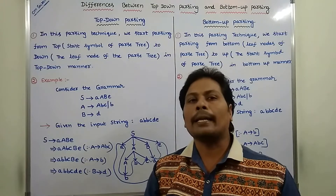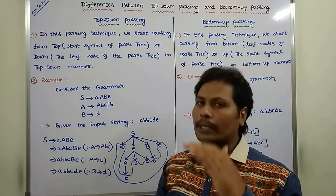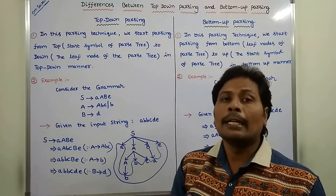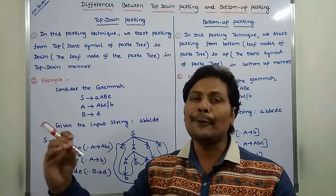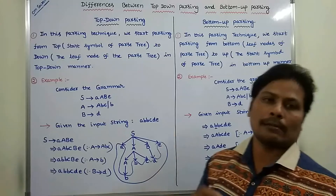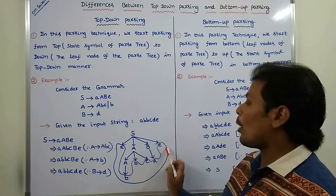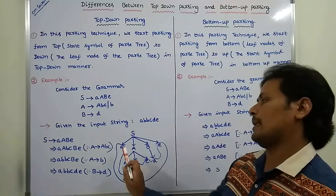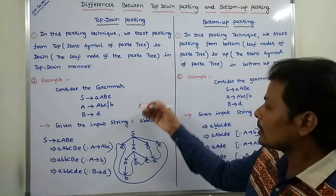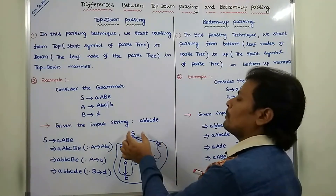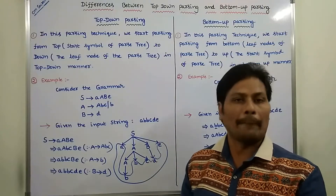First point: in top-down parsing, we start parsing from top to down in a top-down manner. Here, top is nothing but the start symbol of the parse tree, and down is nothing but the leaf nodes of the parse tree. These are the leaf nodes: a, b, b, c, d, e. We start from the start symbol of the parse tree and go down to the leaf nodes in a top-down manner.